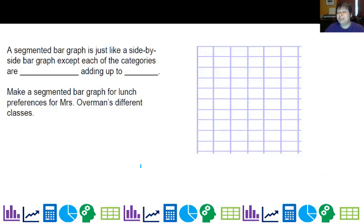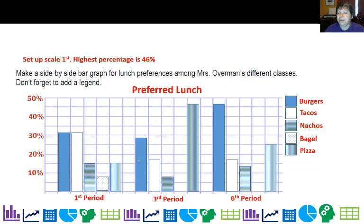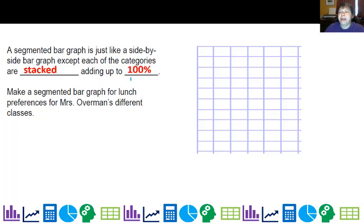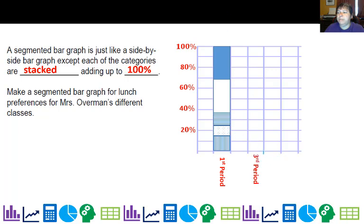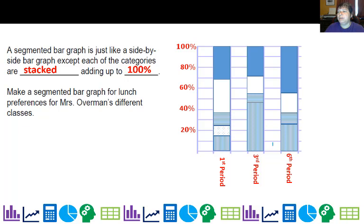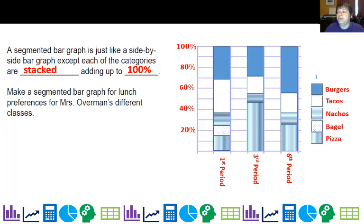A segmented bar graph is just like a side-by-side bar graph, except I'm going to take these little pieces and stack them up — and they should add up to 100%. So they're stacked up adding to 100%, which means my scale goes to 100%. I'm going to do a segmented bar graph for each class: one for first, one for third, and one for sixth period. On segmented graphs, you can see they're always going to be the same height. Don't forget your legend and your title.